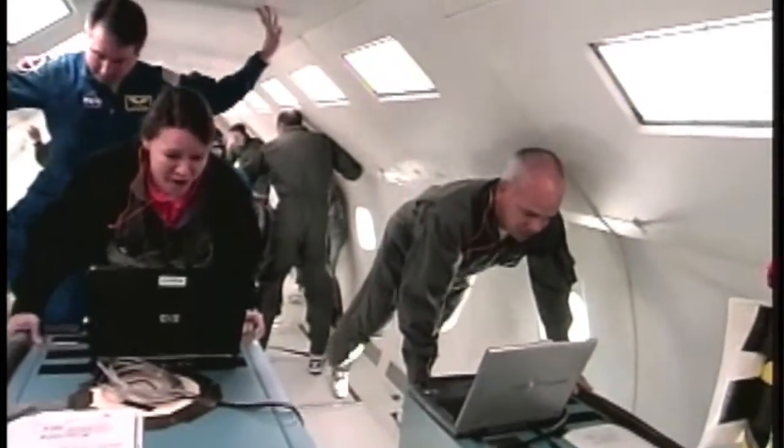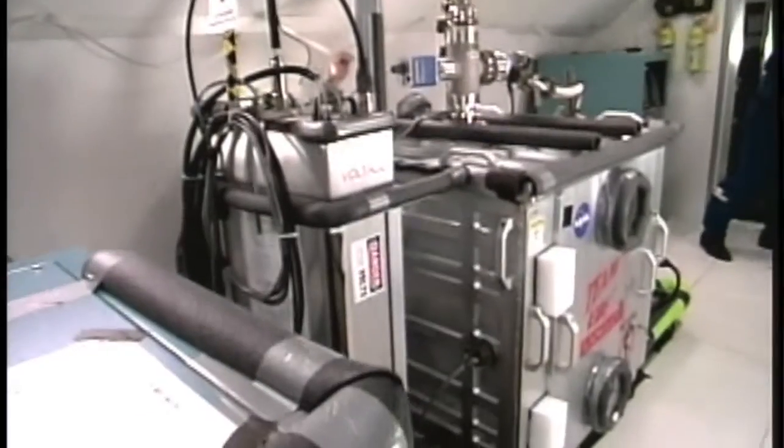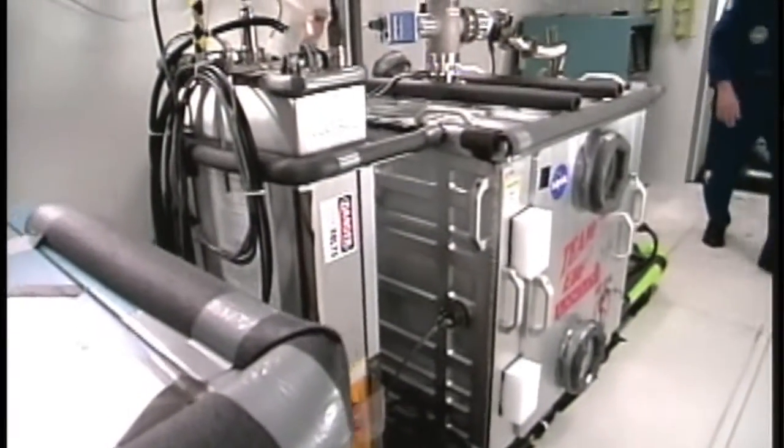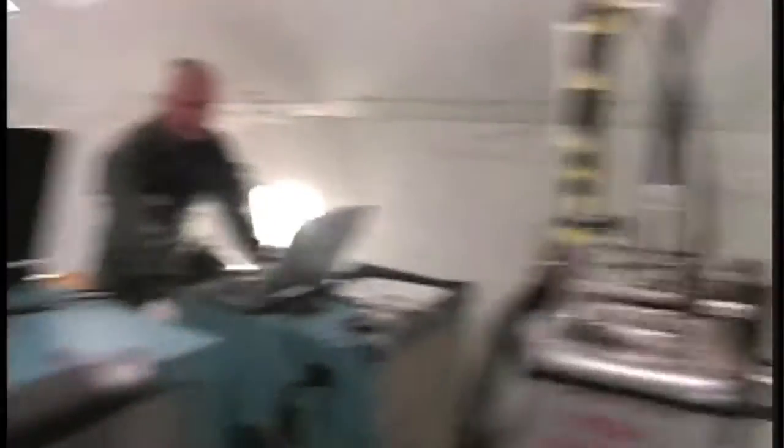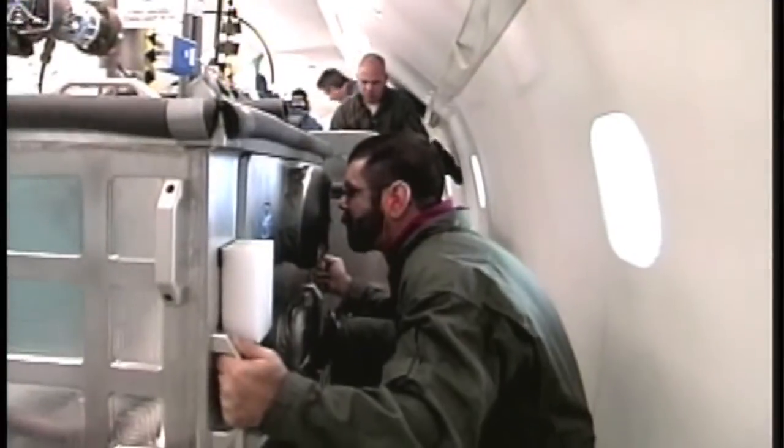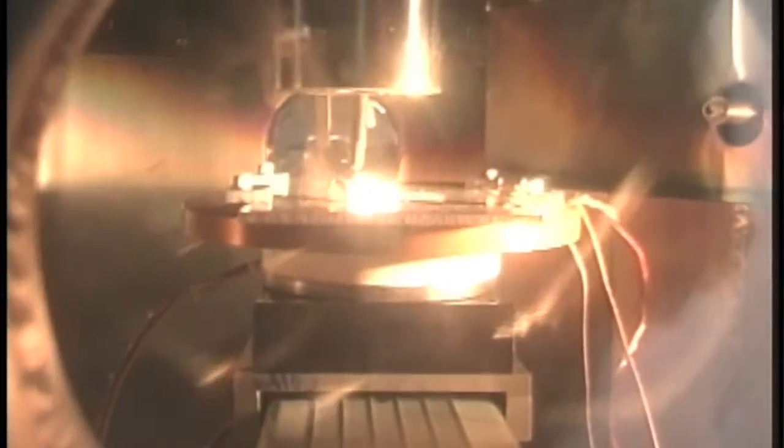The vomit comet was a blast. It was a whole lot of fun. The equipment that we've brought along with us is similar to what we've got here behind us. We had a system that we flew and the equipment worked very well. And actually, the system, the EBF-3 process works very similarly in zero G as it does in one G, which was not what we had expected.